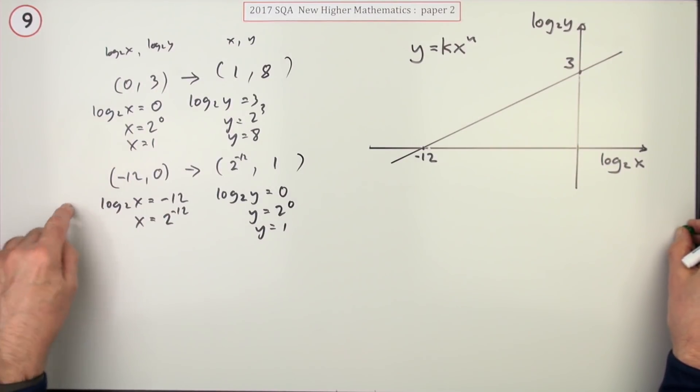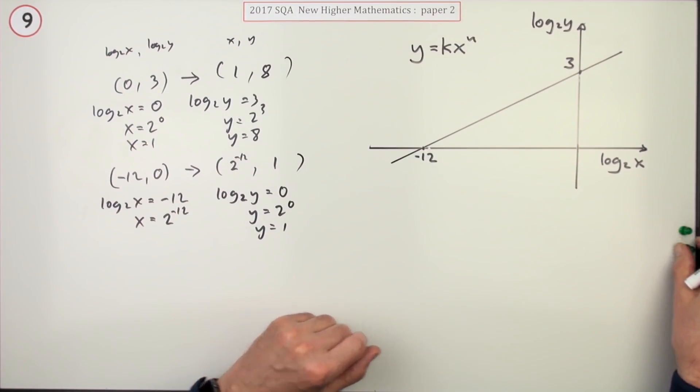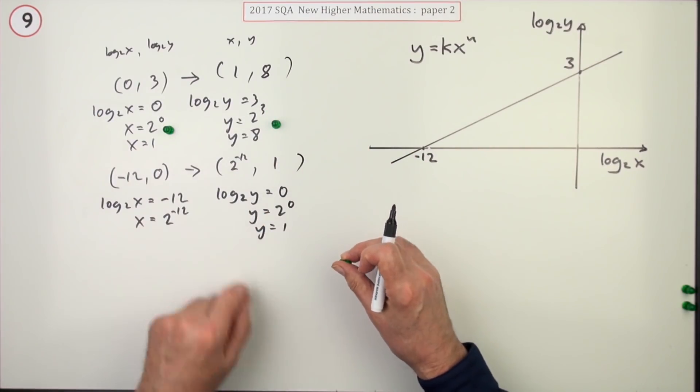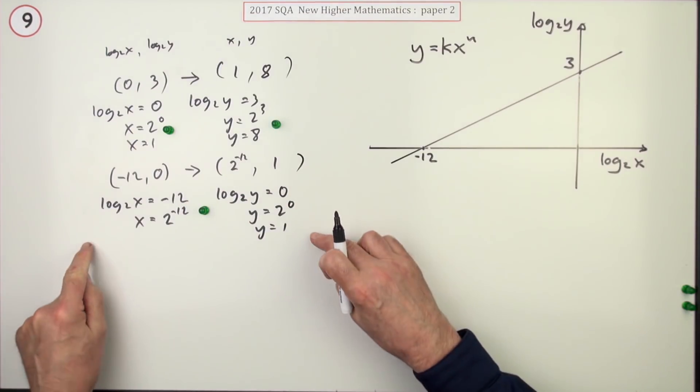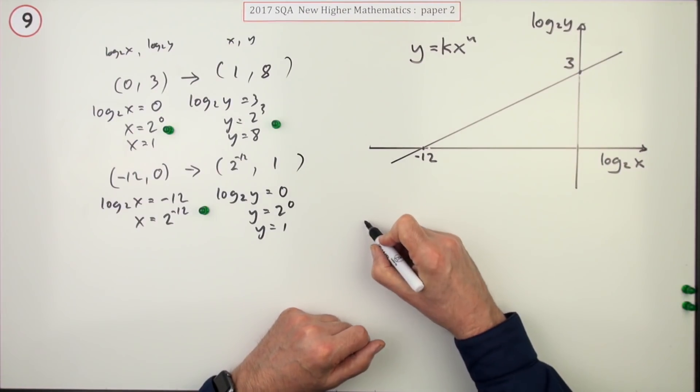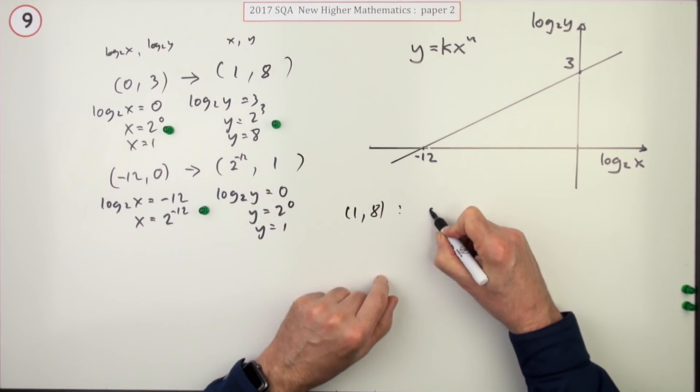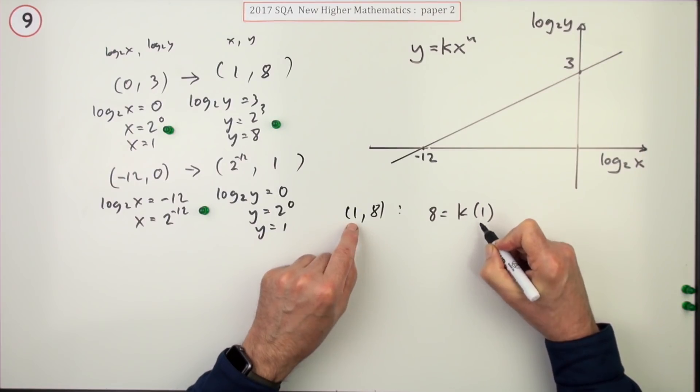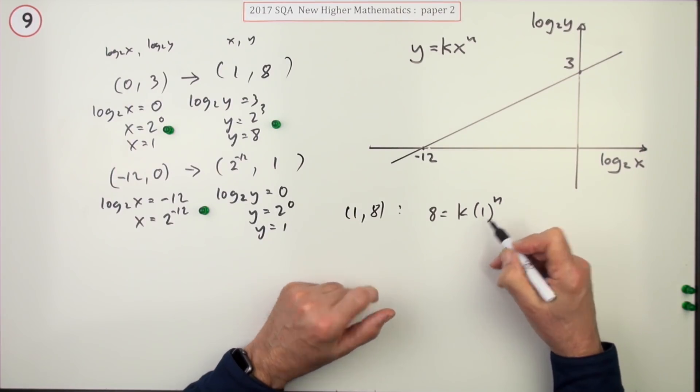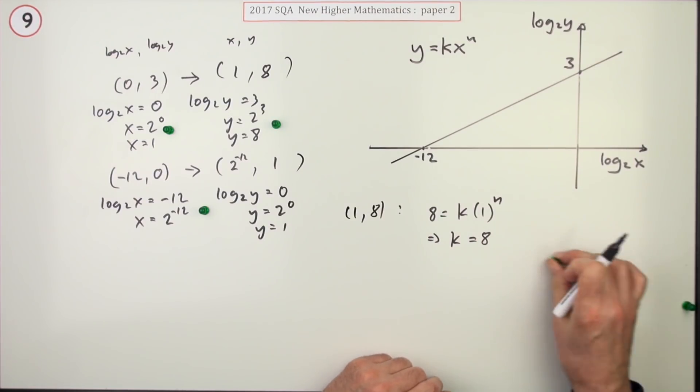Three of the marks go for changing them back to the original x and y coordinates. It goes 2 the first time you did it and 1 the second time because you're just repeating yourself. So in the first one there'd be 1 for getting that and 1 for getting that one, but the second time round it's just the 1. But now you've got to feed those points into this. Well the best one would be the one with the x equals 1 first. So using the point 1, 8, it would read y, which is 8, is k times x is 1 to the power n. And of course 1 to the power anything is 1, so straight away you've got k equals 8. That's a mark.